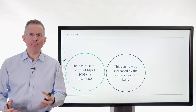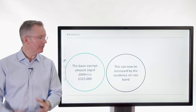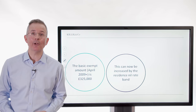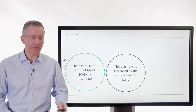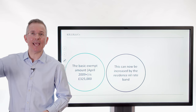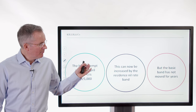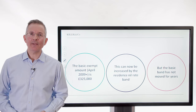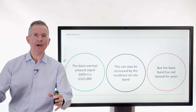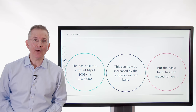Some people will say: yes, but on your primary residence, subject to some conditions, you can increase the £325,000 by £150,000 in 2019-20, thanks to the residence nil rate band. True — there's an extra slice being added on top, only applicable to your primary residence. But the basic band hasn't moved for years, and they've staggered the introduction of this extra band, so that in itself is a bit stealthy.